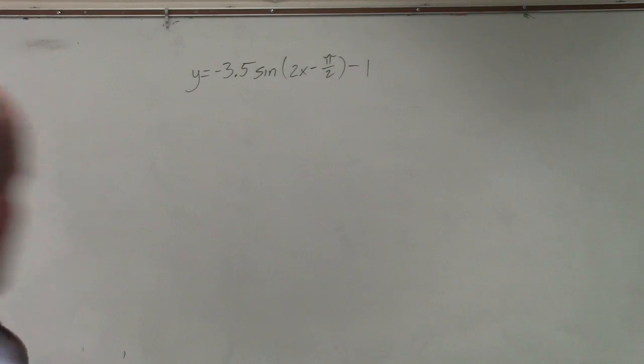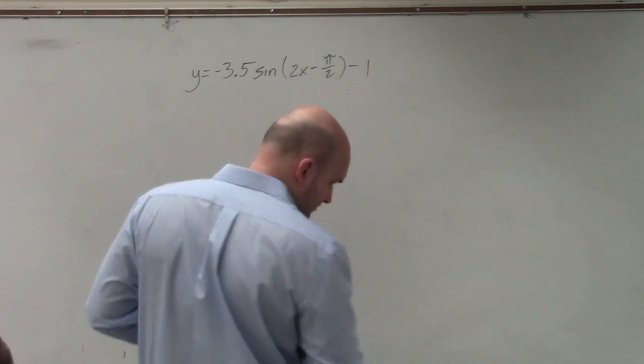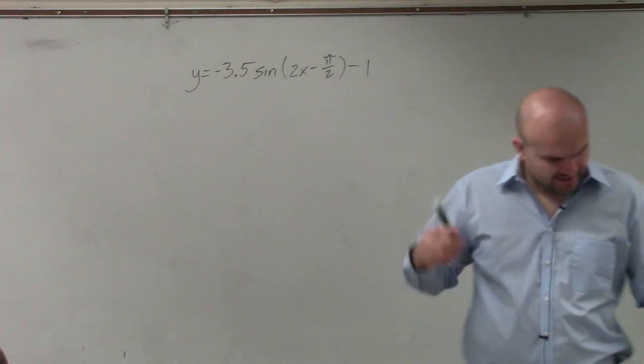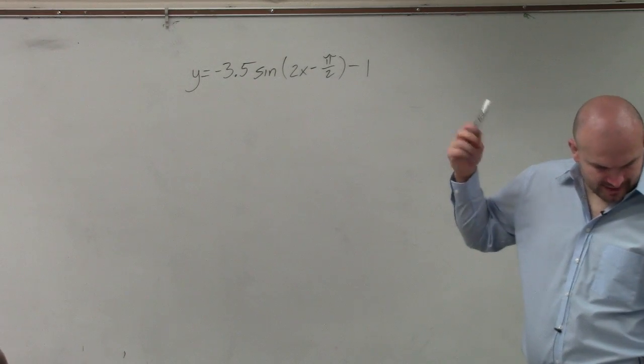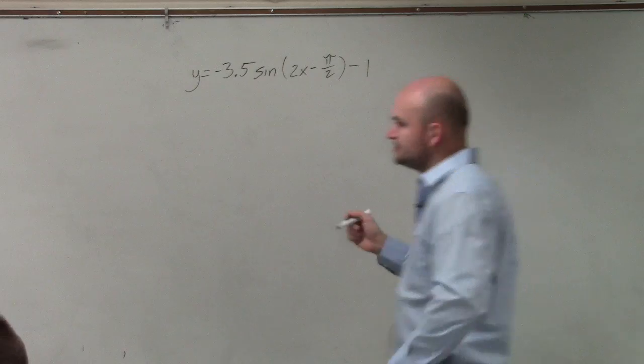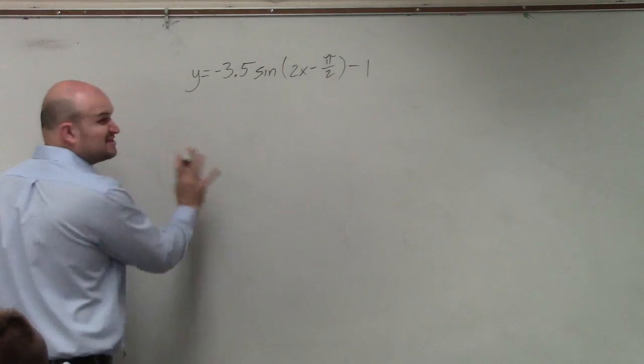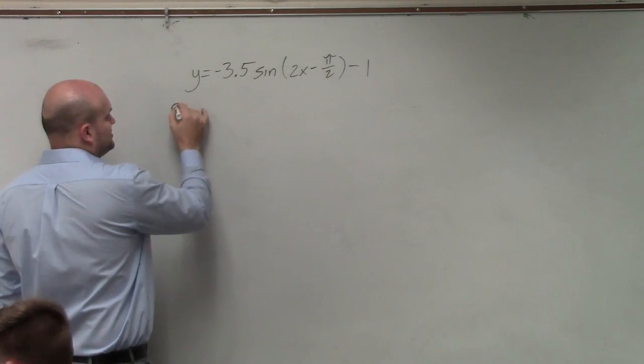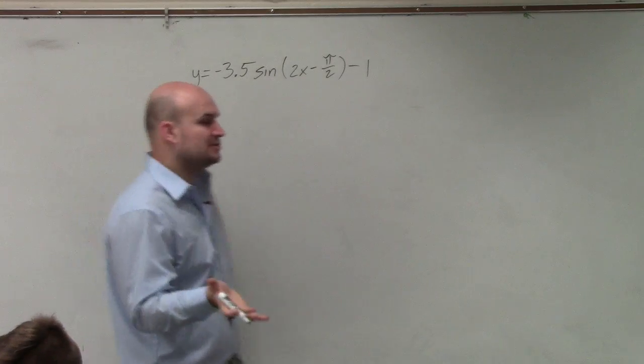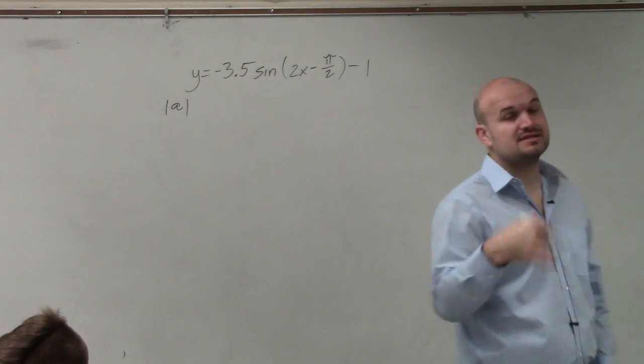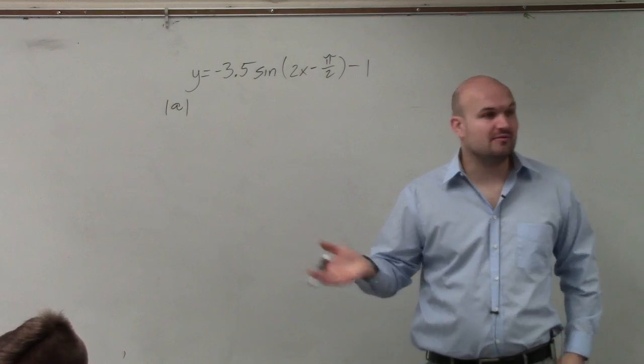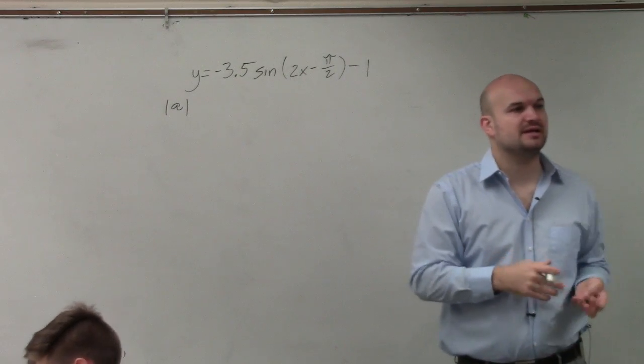We need to find the amplitude, period, phase shift, and vertical translation. First, I always identify the amplitude. Remember, amplitude only comes from sine and cosine, and it represents the half distance from the max to the min.